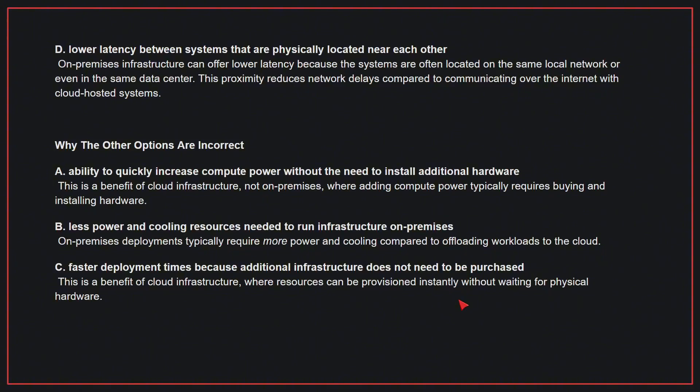Why the other options are incorrect? A: This is a benefit of cloud infrastructure, not on-premises, where adding compute power typically requires buying and installing hardware. B: On-premises deployments typically require more power and cooling compared to offloading workloads to the cloud. C: This is a benefit of cloud infrastructure, where resources can be provisioned instantly without waiting for physical hardware. Therefore, the correct answer is D.